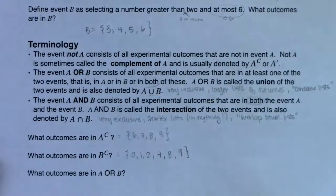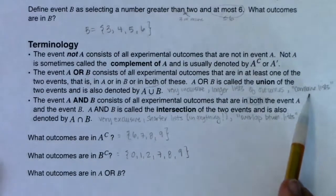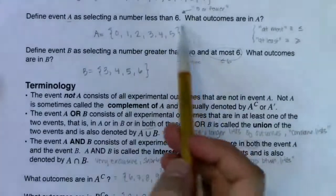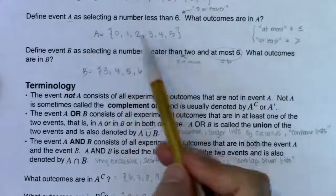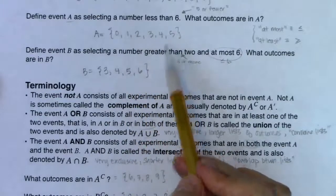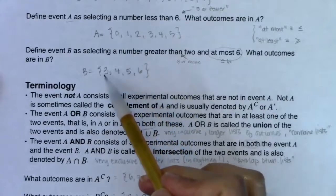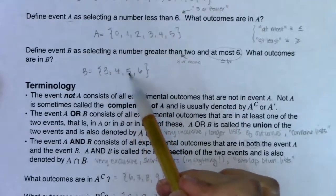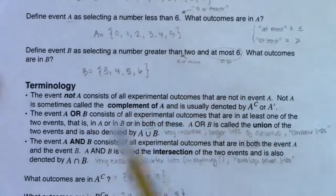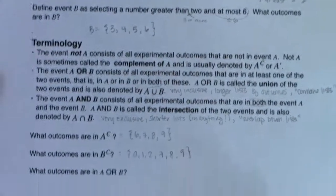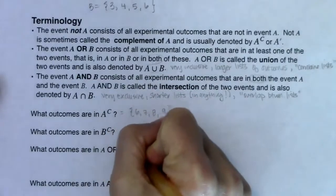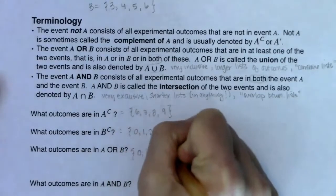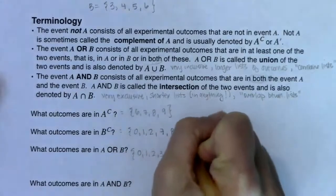For A or B, you want to combine your lists and ignore repeats. A is {0,1,2,3,4,5} and B is {3,4,5,6}. Combining them: three, four, and five are repeats, so I just tack on six. A or B gives us {0, 1, 2, 3, 4, 5, 6}.